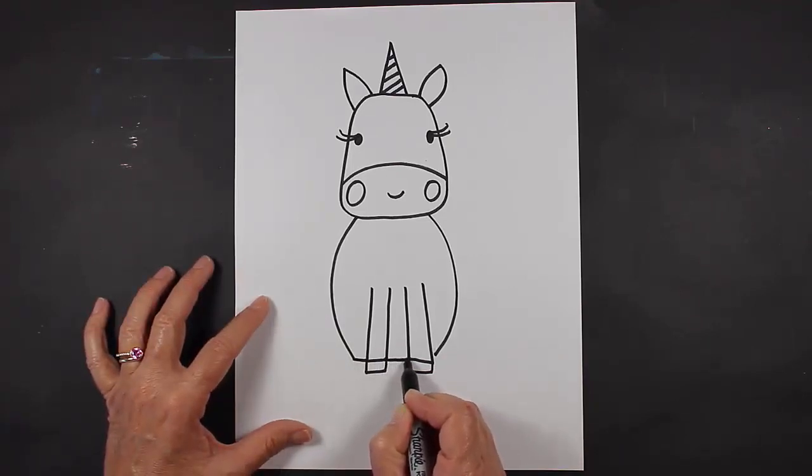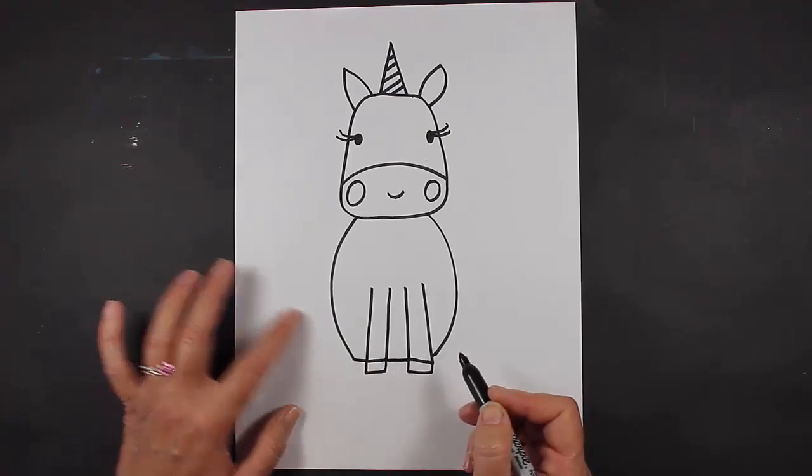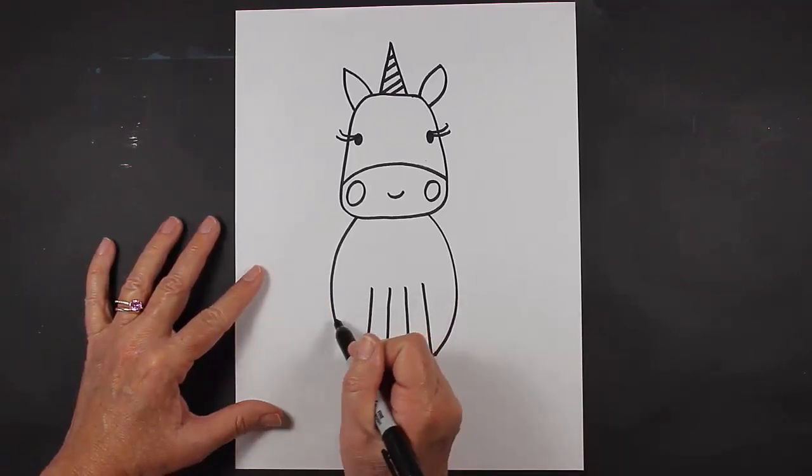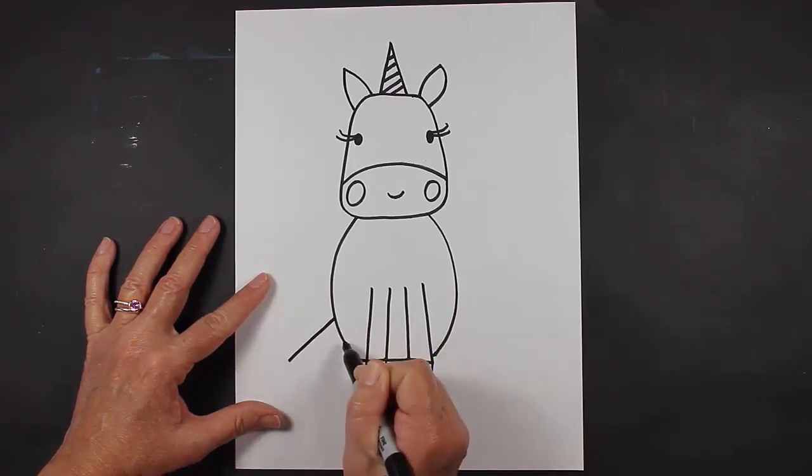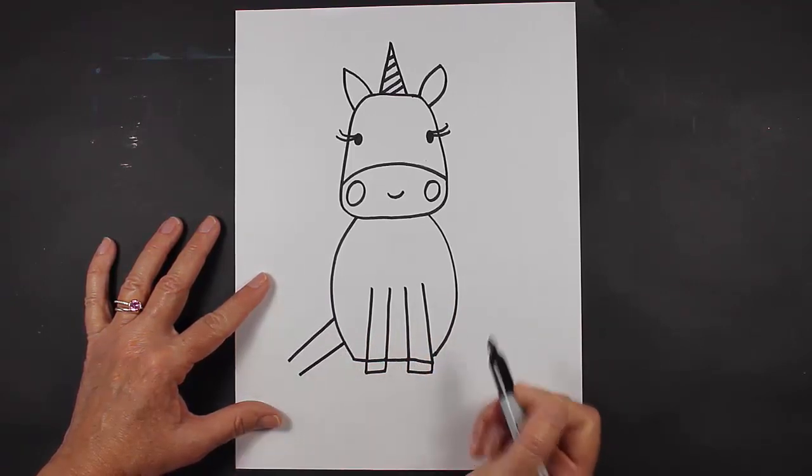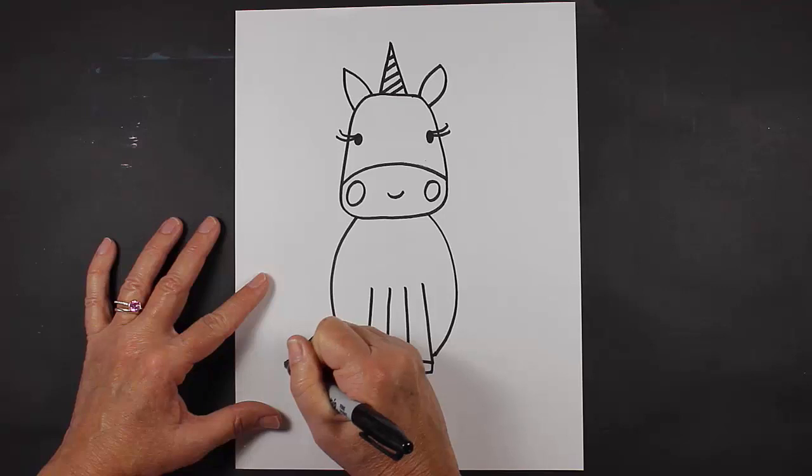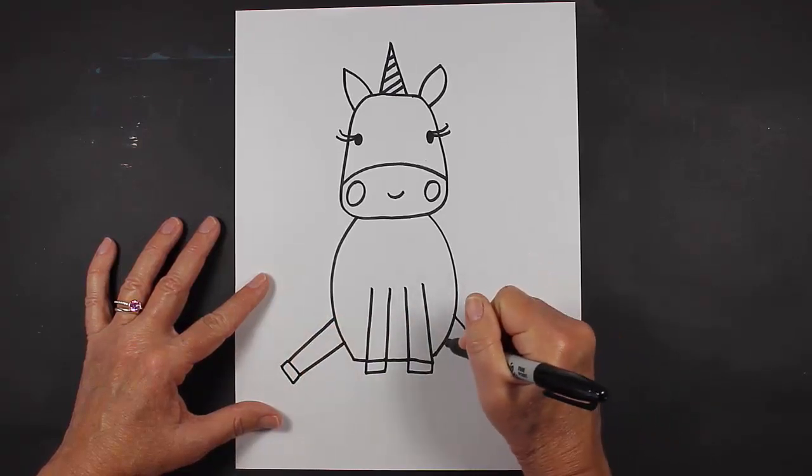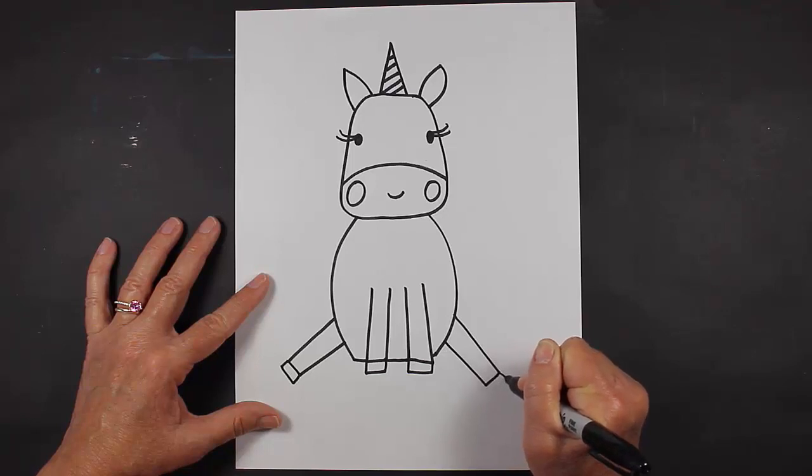And then I'm going to make his back legs—his or her back legs—coming out. It's going to be like he's sitting down, so we put a leg here with a hoof at the bottom and a leg here with the hoof at the bottom.